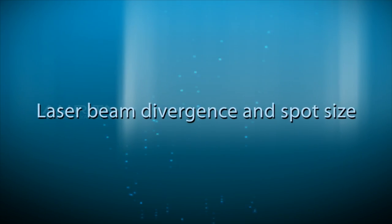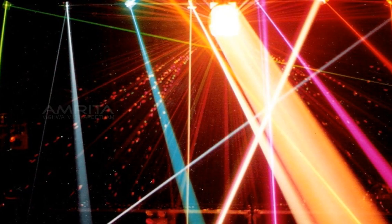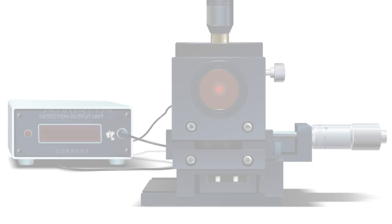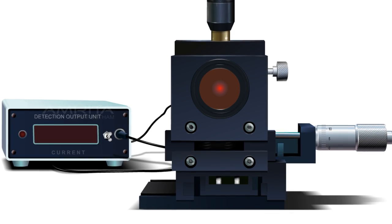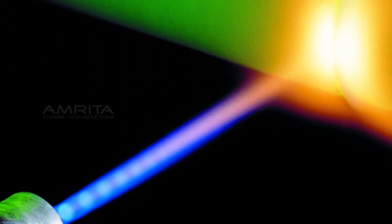Laser beam divergence and spot size. Laser light is usually a spatially coherent, narrow, low-divergence beam that can be manipulated with lenses. In this experiment, our aim is to find the laser beam divergence and spot size using a detector.